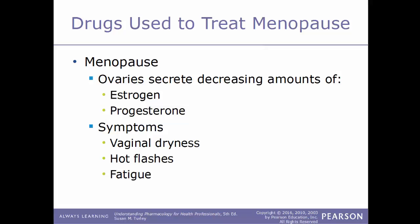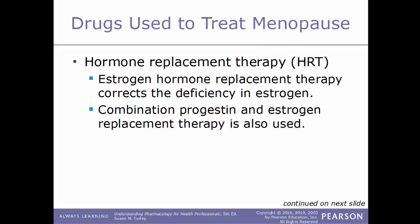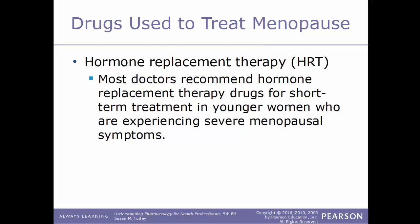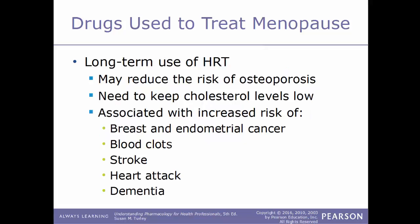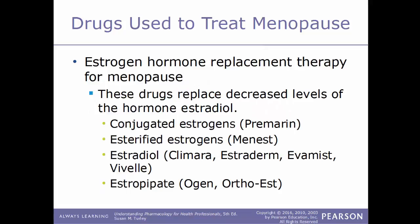Now we'll talk about drugs used to treat menopause. With menopause, the ovaries secrete decreasing amounts of estrogen and progesterone. Common symptoms include vaginal dryness, hot flashes, and fatigue. One method of treatment is HRT, hormone replacement therapy — either estrogen hormone replacement therapy to correct the deficiency in estrogen levels, or combination therapy that includes progestin and estrogen replacements. Most doctors recommend HRT as a short-term treatment for younger women experiencing severe menopausal symptoms. Long-term use may reduce the risk of osteoporosis but is also associated with a higher risk of breast and endometrial cancers, blood clots, strokes, heart attacks, and dementia.